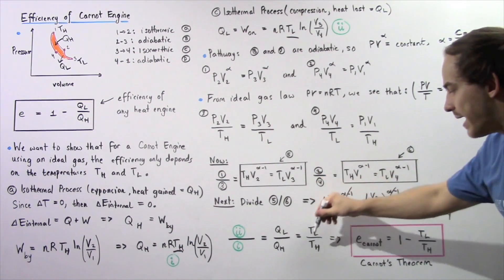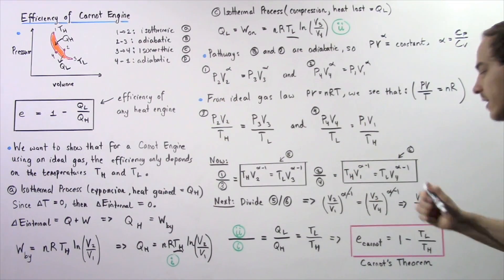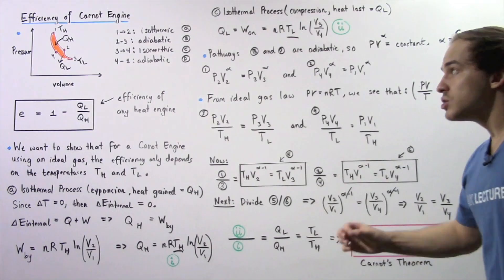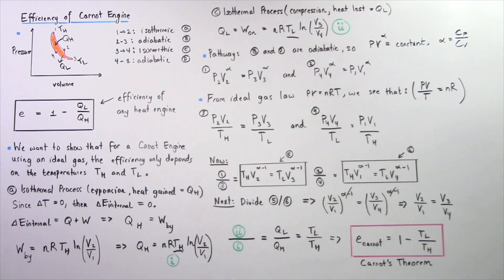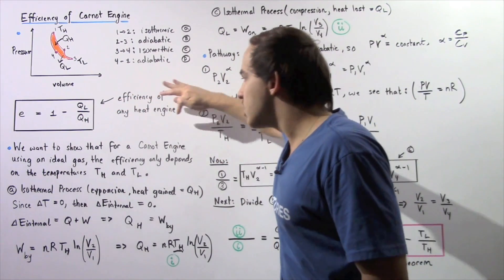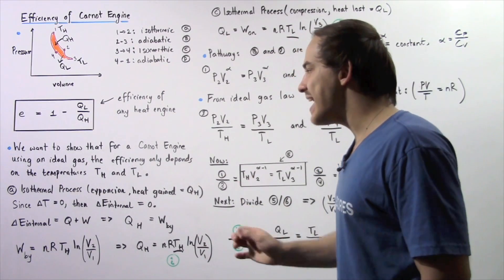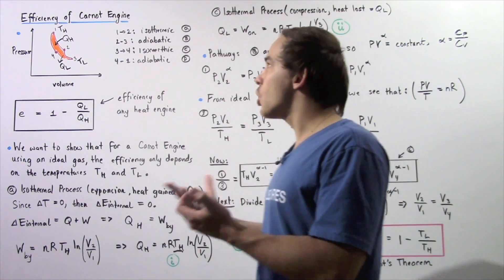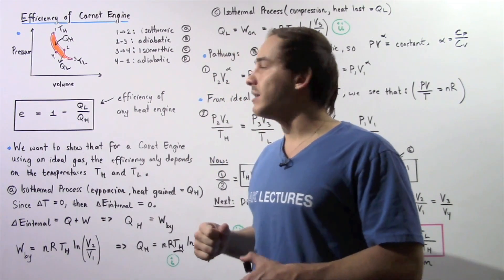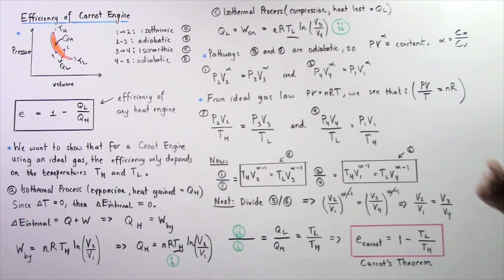Because TL/TH = QL/QH, we can substitute into the efficiency formula to get the efficiency of a Carnot engine: e = 1 − TL/TH. This is Carnot's theorem. We have shown that for a Carnot engine using an ideal gas, the efficiency only depends on the temperatures TH and TL. This also tells us that two different Carnot engines operating between the same temperatures TL and TH will have the same exact efficiency.